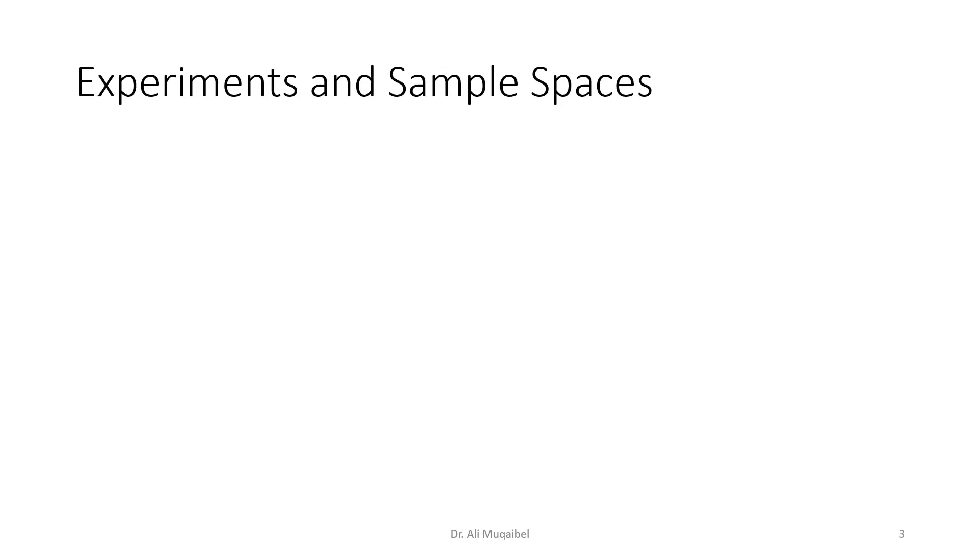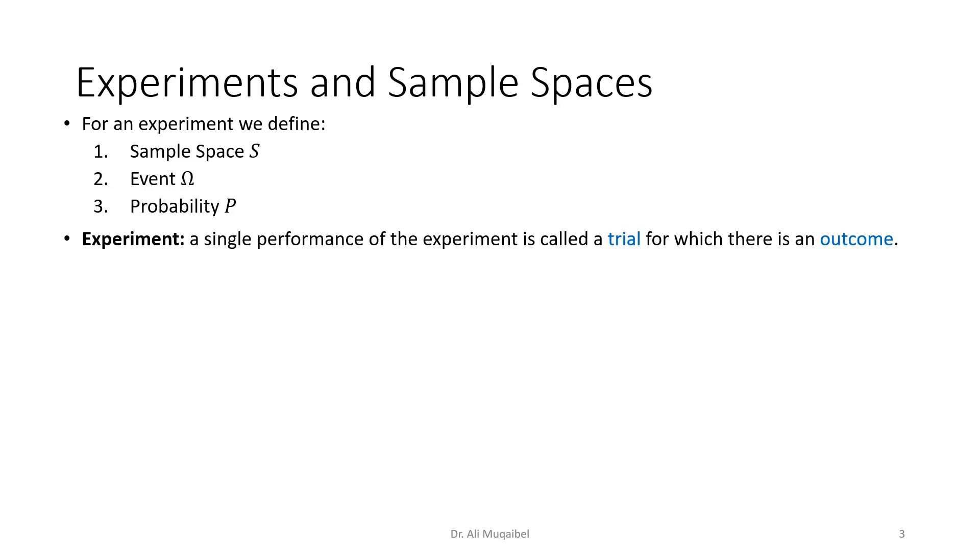Experiment and sample spaces: Basically, every experiment to define an experiment, we need to define what the sample space is, and then we define a certain event capital omega, and we associate probabilities with the outcomes. So we have an experiment that contains sample space, all possibilities, certain events, and probability associated with that.